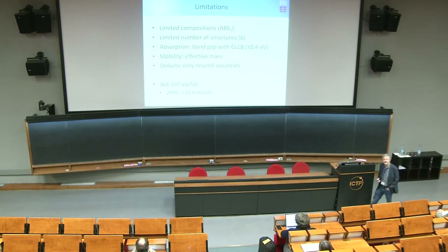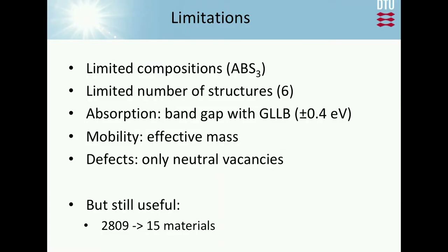There are many limitations in this approach: only a particular composition, only a few structures, not very accurate band gap calculations, mobility addressed only by effective masses, and only neutral vacancies considered for defects. So there is room for lots of improvement. But still, starting from something like 3,000 materials and ending up with a short list of 15 represents a huge reduction in the number of materials to worry about.